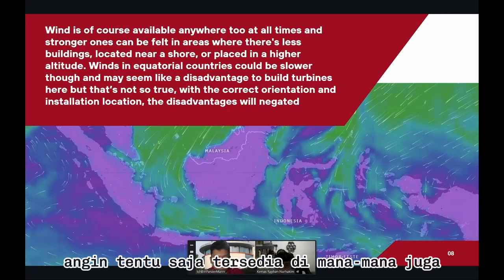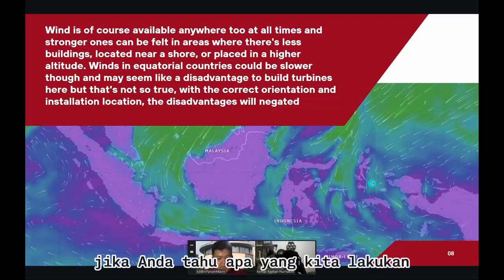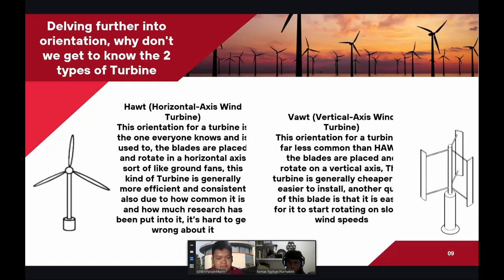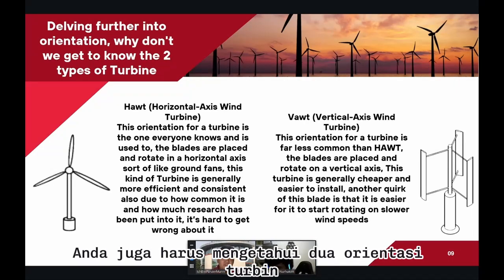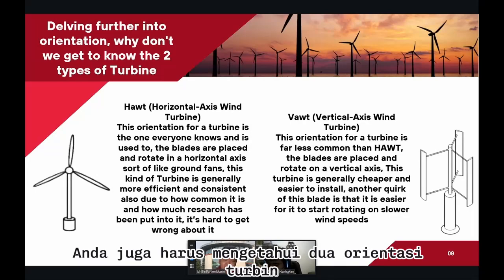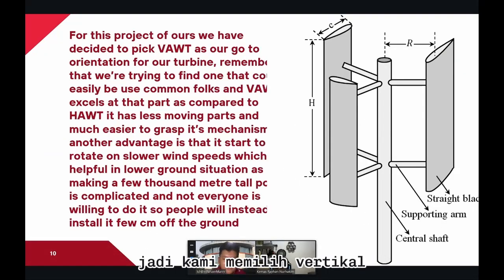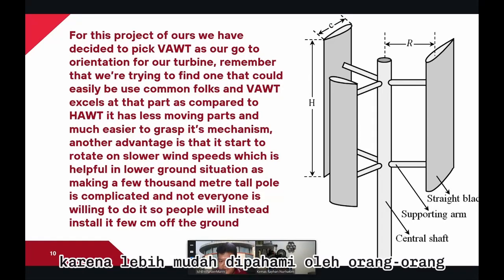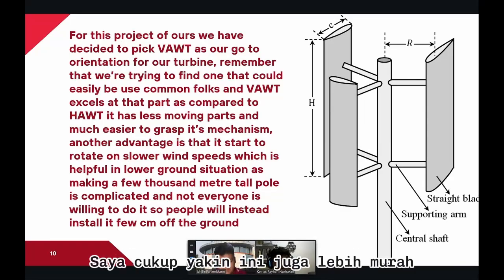Wind is of course available everywhere. And even though the wind is slower in the equatorial zone, if we know what we're doing, the limitations will be negated. You should also know the two orientations of turbines, which is horizontal and vertical. We chose to use vertical because it is much easier for people to understand, as it has fewer moving parts and is also cheaper.